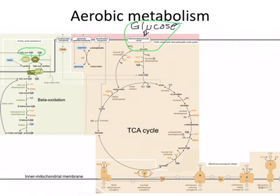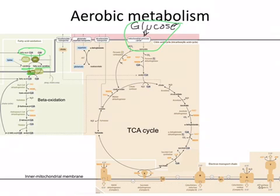Fatty acids, to be oxidized, first must enter the mitochondrial matrix, and they do so through a carnitine shuttle. The coenzyme A is transferred off and carnitine is transferred on. Once we have a fatty acyl-carnitine, it can go through the translocase, and the carnitine is transferred back off by CPT2 and CoA is put back on. That whole process gave us fatty acyl-CoA inside the mitochondrial matrix, which then can be oxidized.